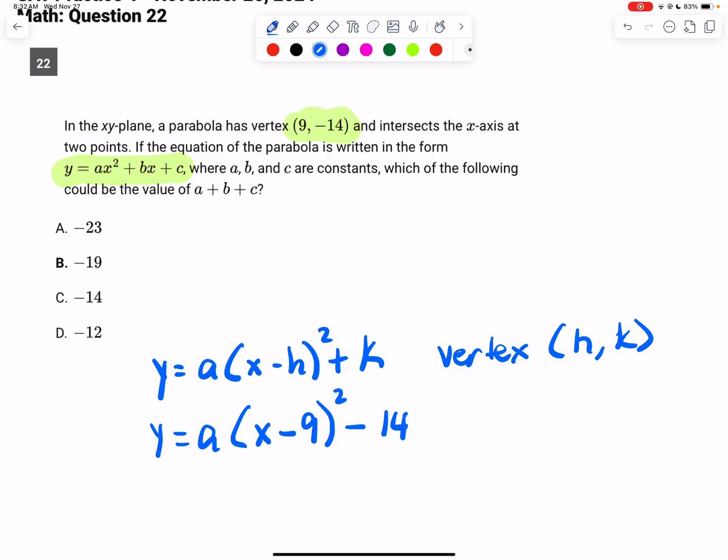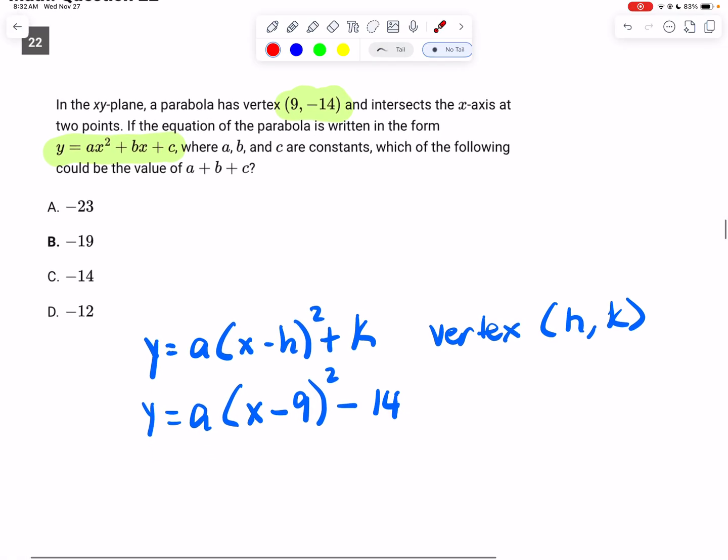Alright, so that's in vertex form, but unfortunately we do not know what a is. I think that's the goal of this question. If you could figure out what a is, I think b and c will come together. But let's go ahead and check that out and see.